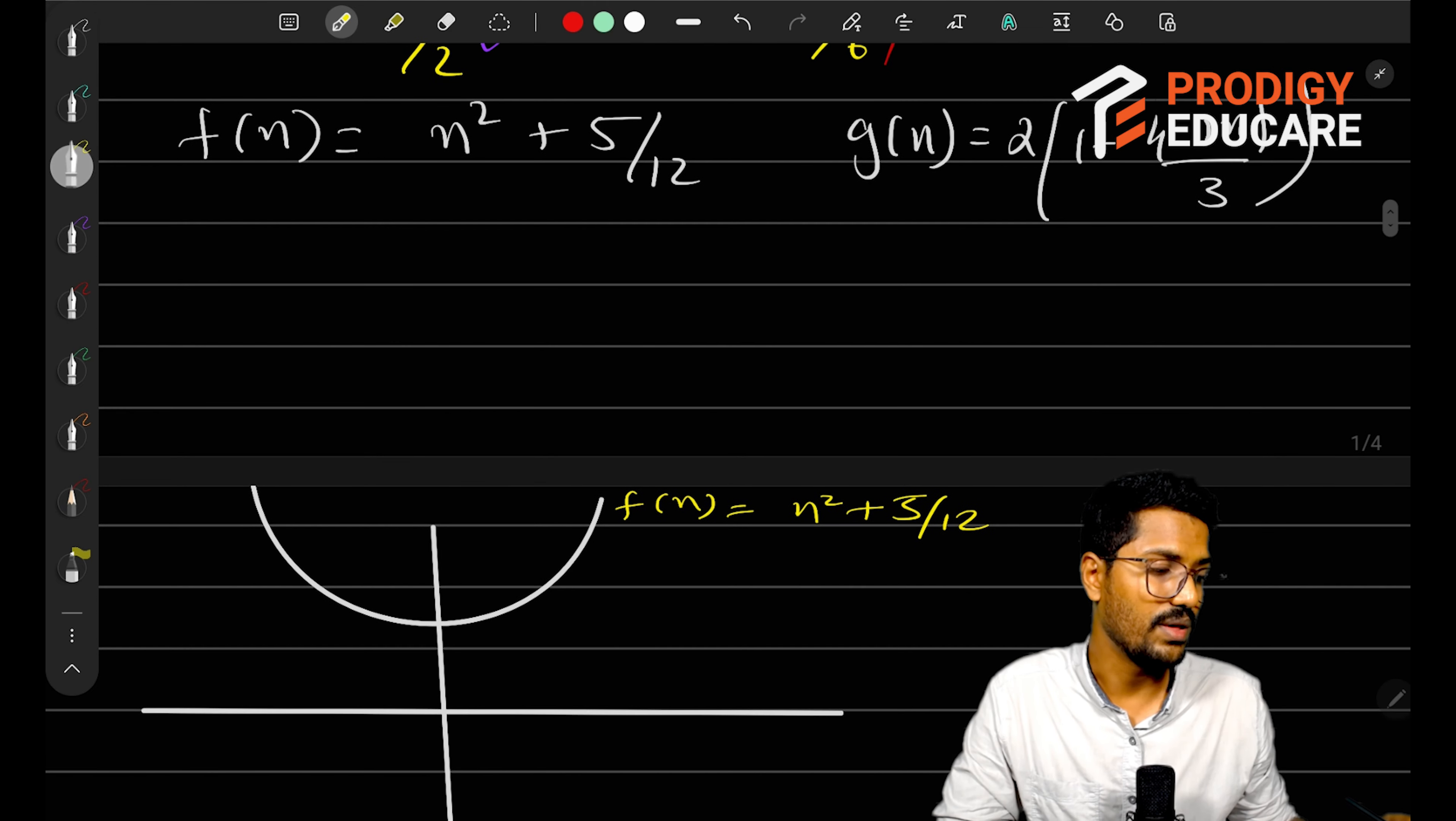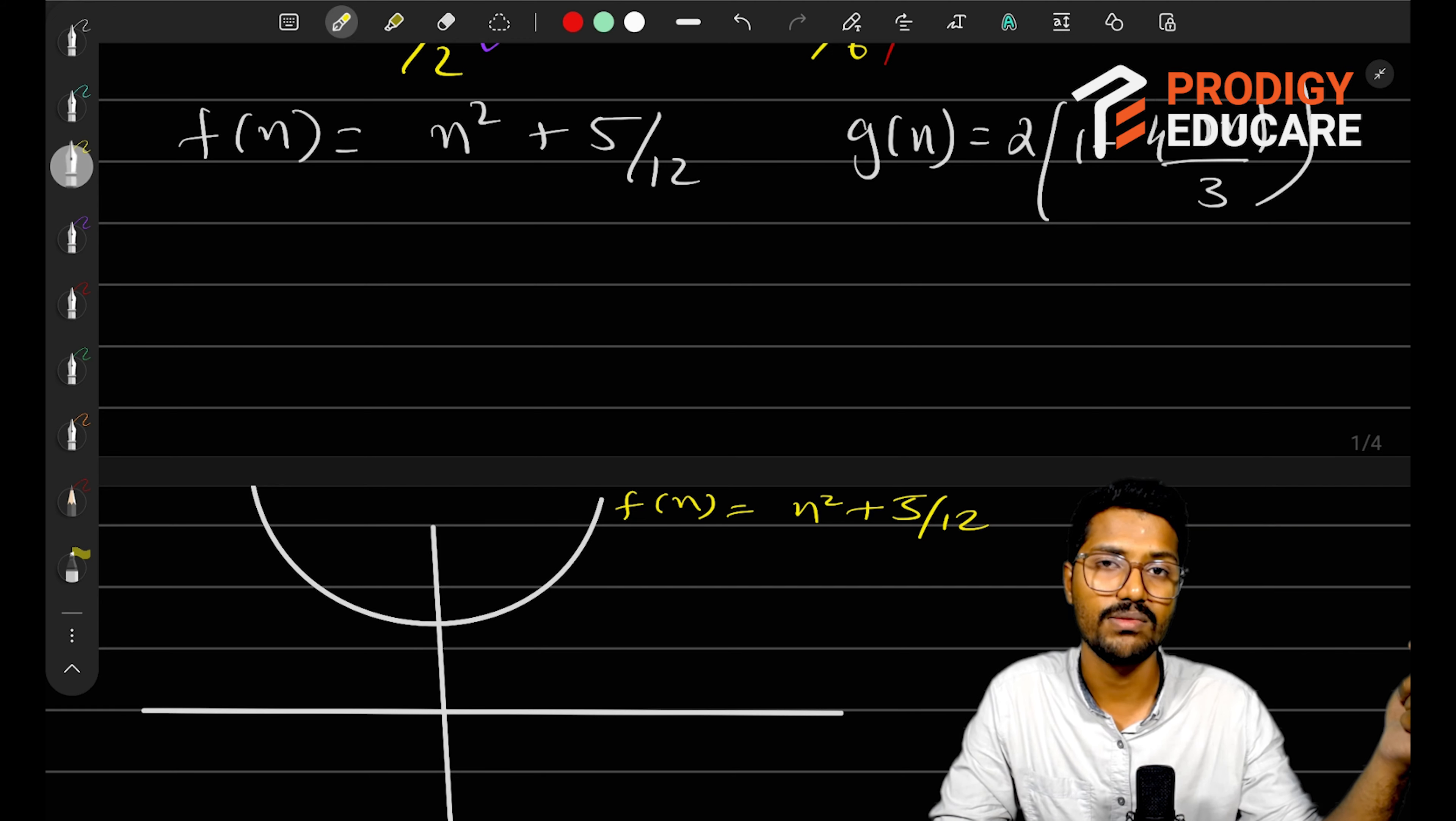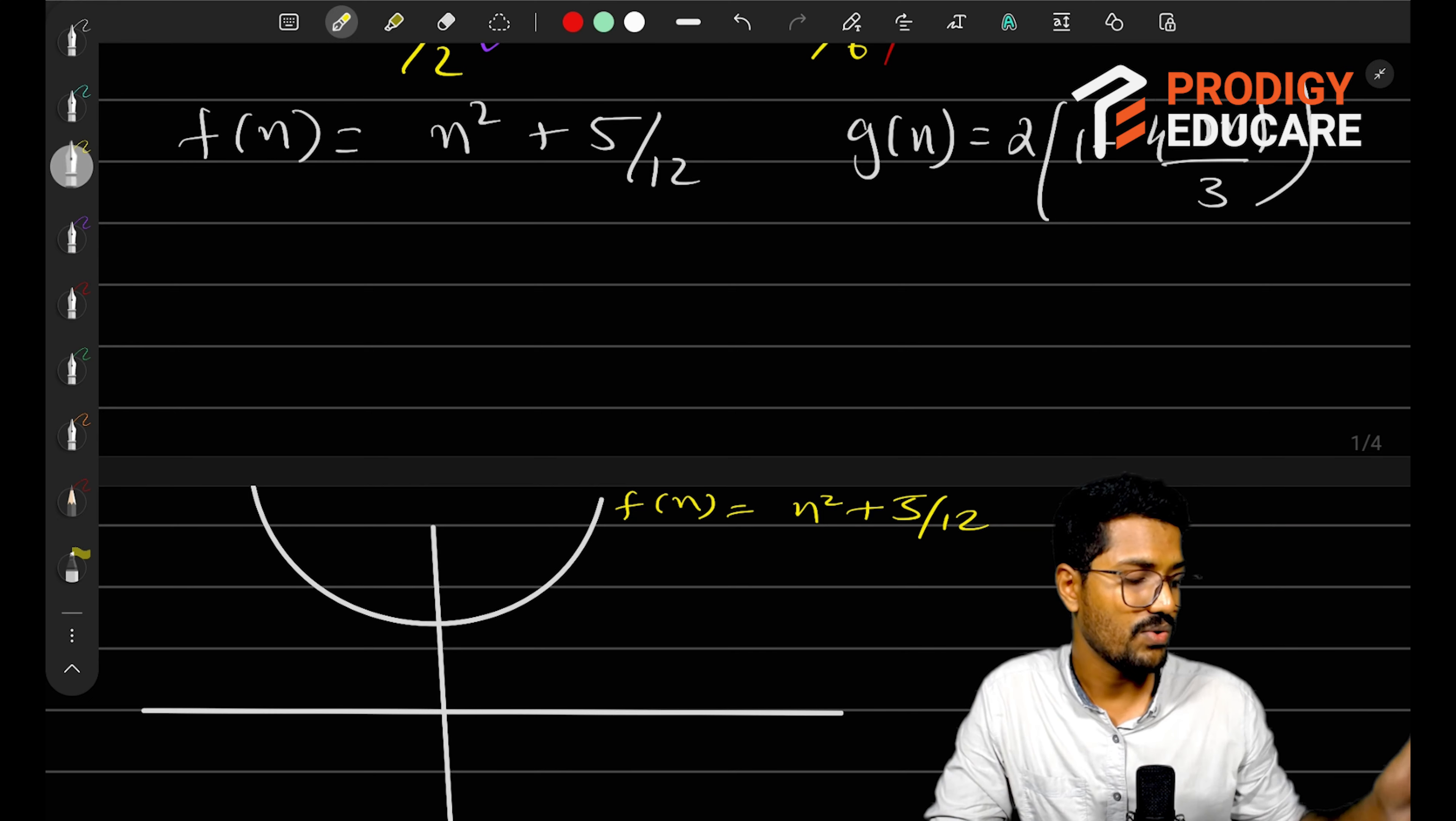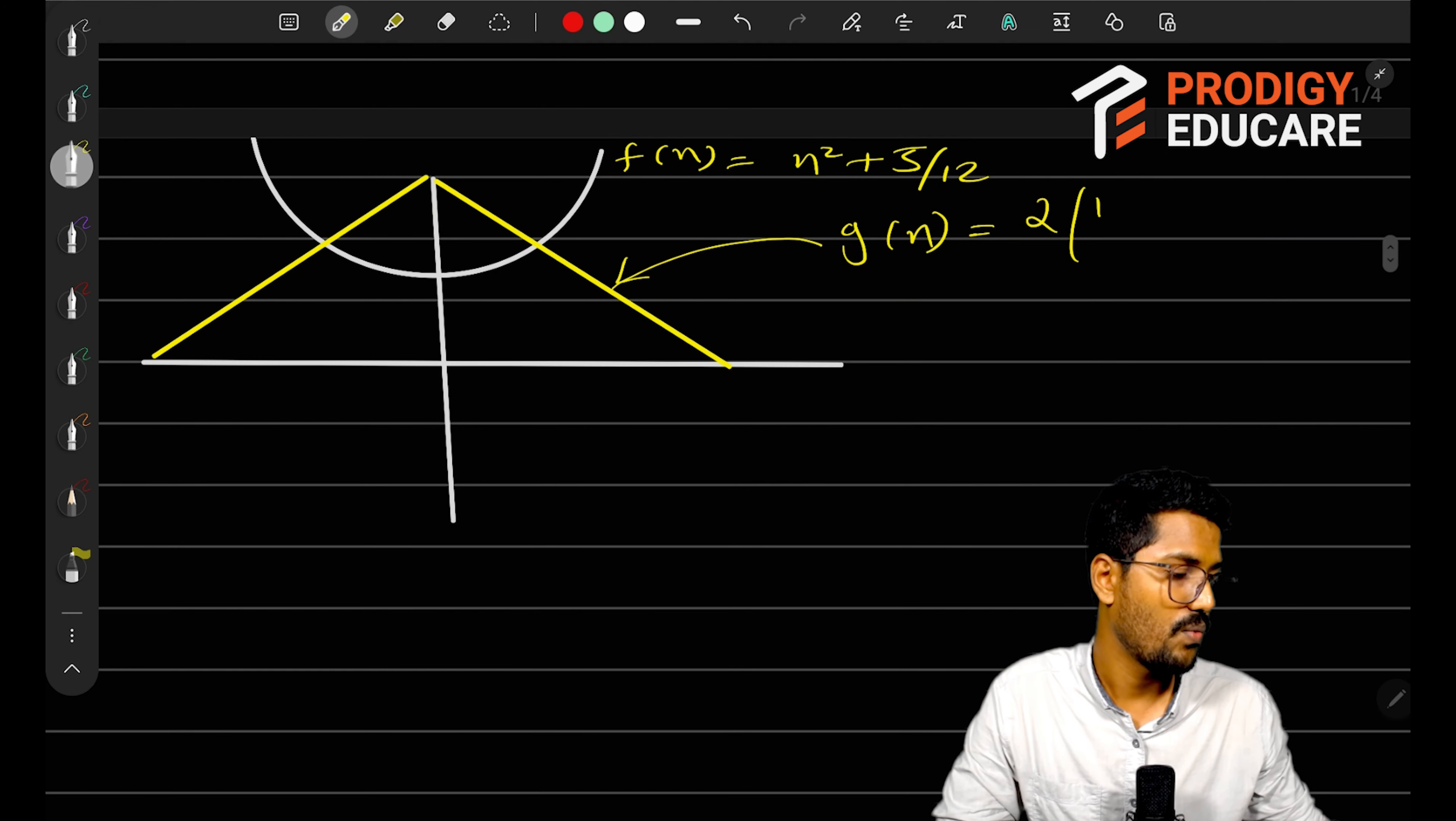For drawing g(x), see, it is a negative graph, a negative straight line. Directly, they gave 3 minus 4 times x over... 4 times of x. So negative slope of straight line, whose slope is negative. So I can say it will be something like this. The function g(x) equals 2(1 - 4|x|/3).